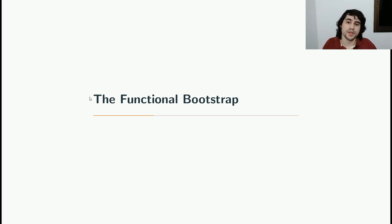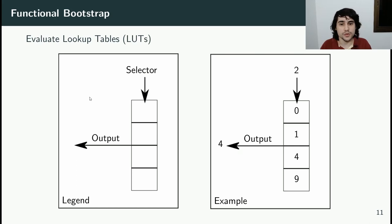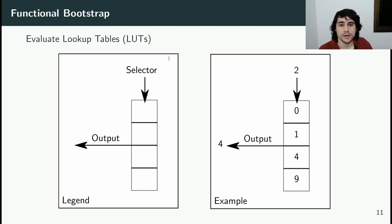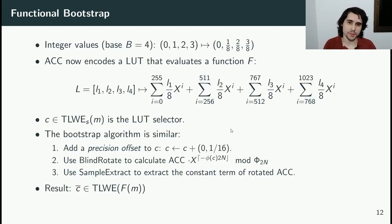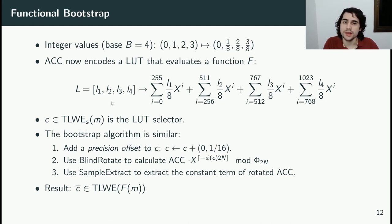The basic idea of the Functional Bootstrap is to evaluate a function within the bootstrap instead of just resetting the error. In TFHE, the functional bootstrap evaluates lookup tables. Here we have an example with input selector 2, a lookup table encoding the square function, and output 4 — the square of 2. The functional bootstrap is similar to the regular bootstrap, with two main differences: first, we encrypt integers in some base (base 4 in this example); second, ACC now encodes the lookup table we want to evaluate.